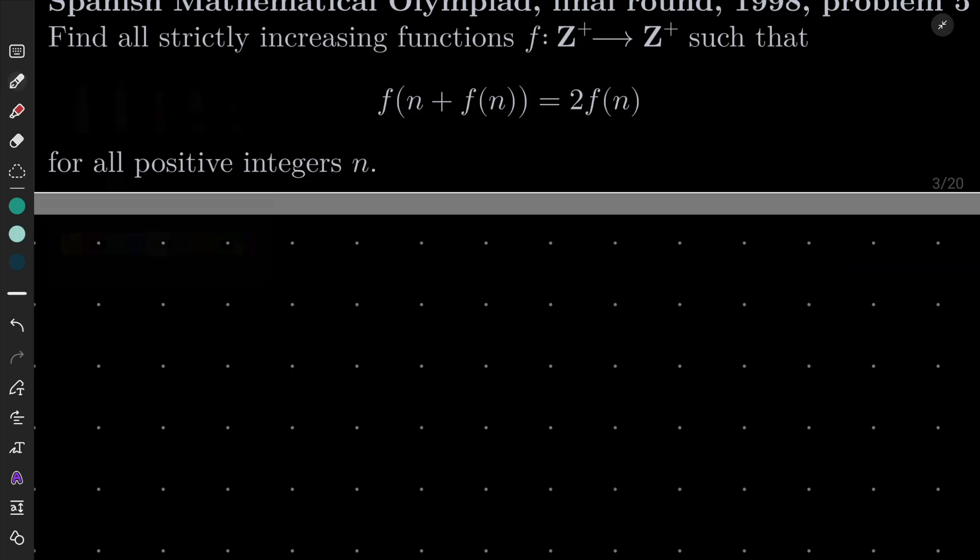Okay, so let b be defined as f(1) - 1. In other words, f(1) = 1 + b, where b is obviously some natural number ≥ 0.